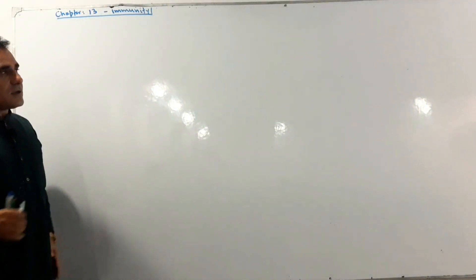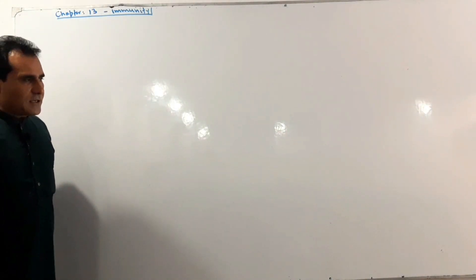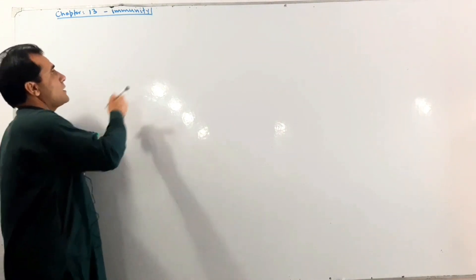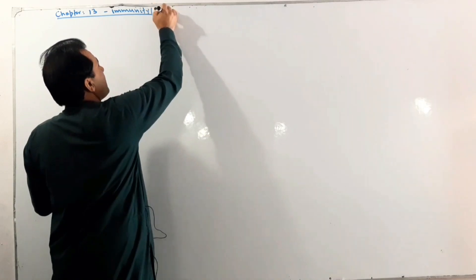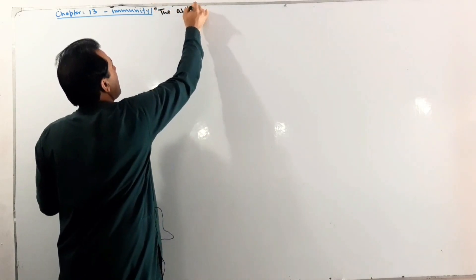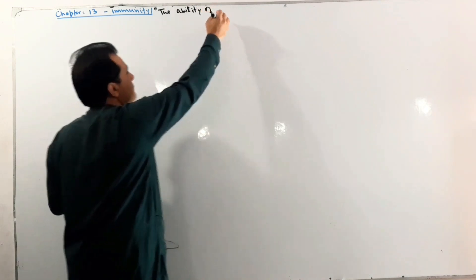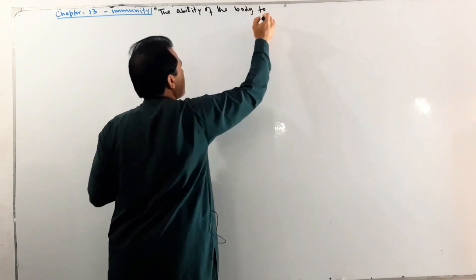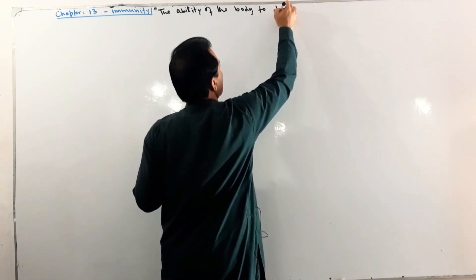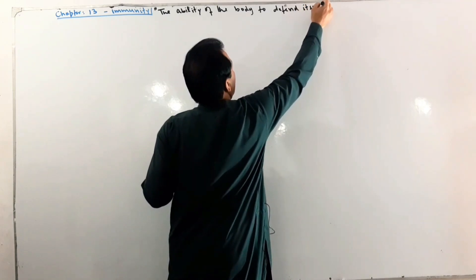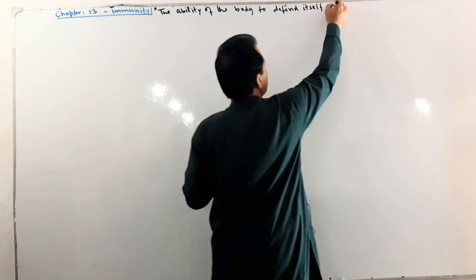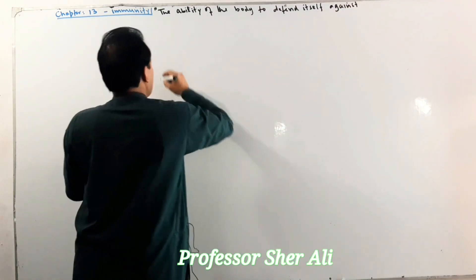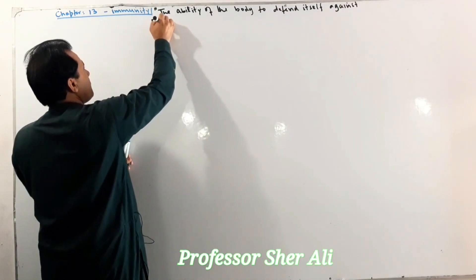Bismillahirrahmanirrahim. Now, chapter: immunity. Immunity is defined as the ability of the body to defend itself against pathogens.